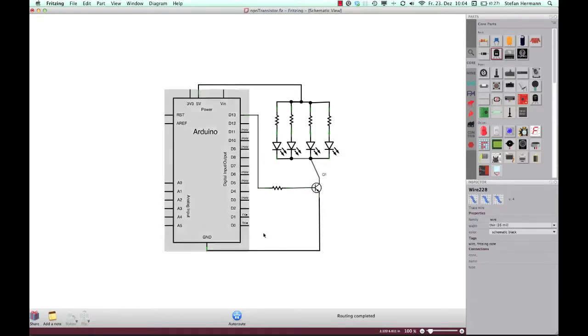The emitter of the transistor is connected to the ground of the Arduino. The base of the transistor is connected to our pin—in that case it is digital 13, it could even be another one. And the last thing is the LEDs are all connected to the 5 volt plus.